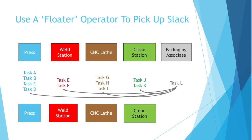Another option is to have the packaging associate be a floater. Sometimes you can't reassign tasks — on paper each operator takes roughly the same time, and reassigning tasks would only create new bottlenecks. But in scenarios where one operator has large amounts of downtime or the lowest average time, depending on what the other tasks are, you can have that person float — move over to other stations and help with simple tasks like positioning tools, cleaning something off, or pressing a button. In this way, the floater picks up the slack of other workers.